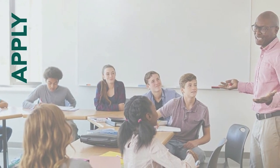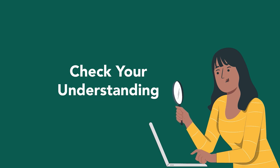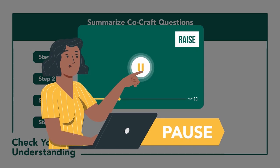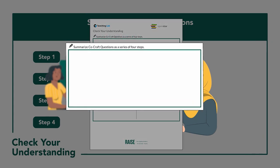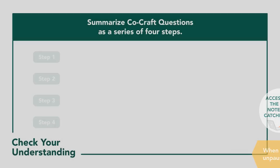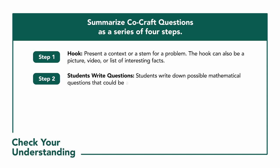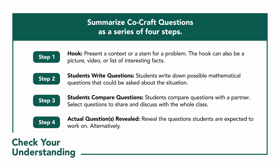What you just experienced is an application of CoCraft Questions through a series of intentionally planned steps. Check your understanding of the routine with a few questions. Summarize the routine as a series of four steps — pause the video to give yourself time to think, and access the note catcher to record your thinking. The teacher applies this routine by first presenting minimal context to hook students, then having students write any mathematical questions that could connect to the situation, then having students compare their questions with a peer and whole class, and finally revealing the original task question to begin solving.